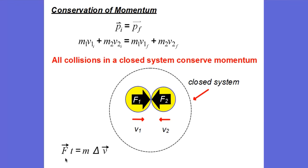So looking at the impulse-momentum theorem, if both objects experience the same force for the same amount of time, they'll both experience the same change in momentum. The change in momentum of the first object will be equal but opposite in direction to the change in momentum of the second object. So the net change is zero — momentum is conserved.